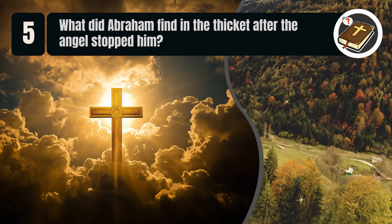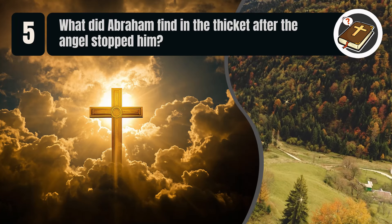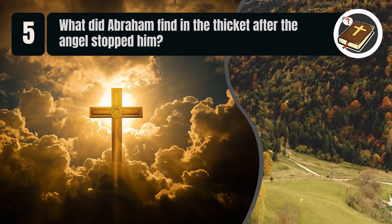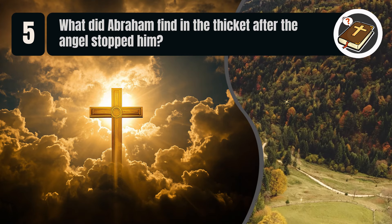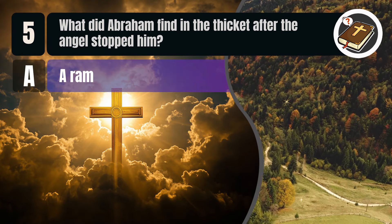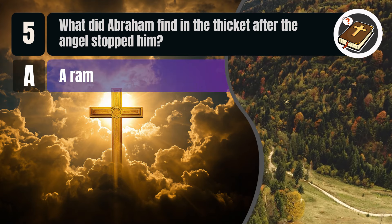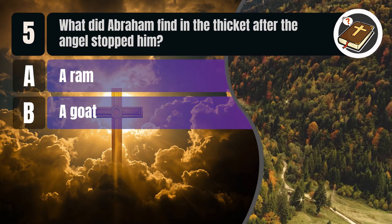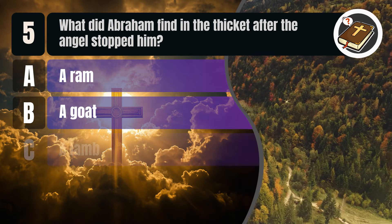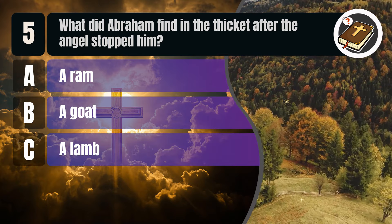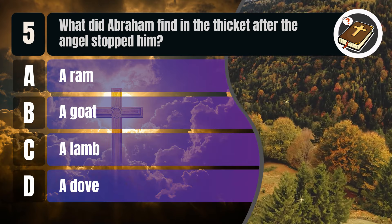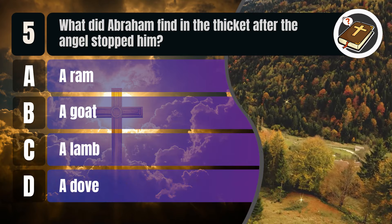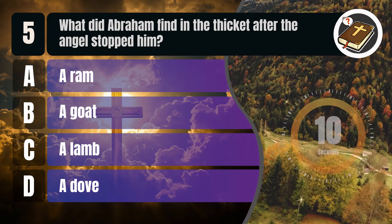Question 5. What did Abraham find in the thicket after the angel stopped him? A. A ram. B. A goat. C. A lamb. D. A dove.